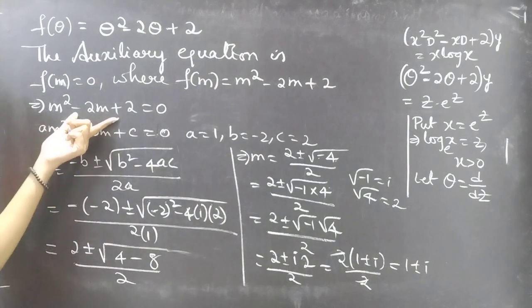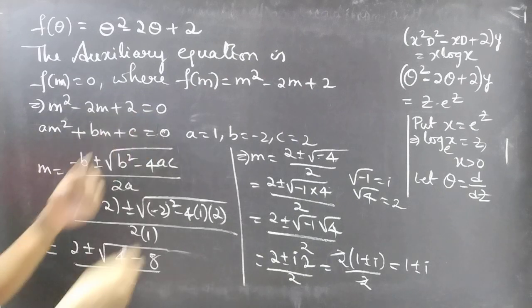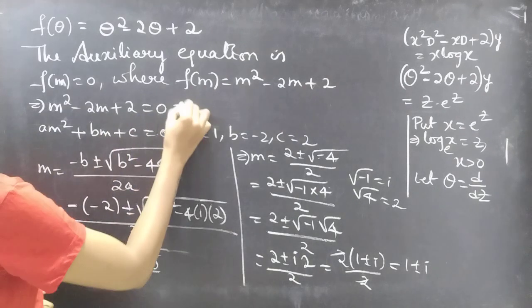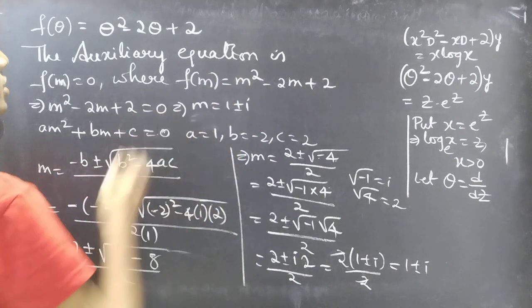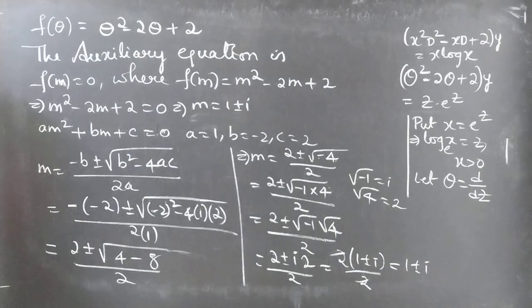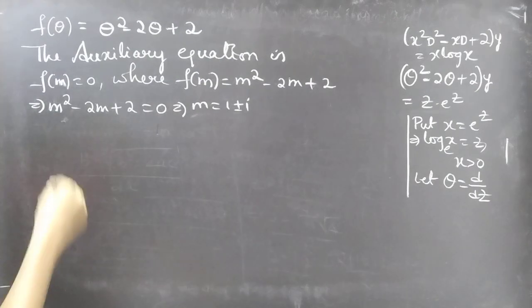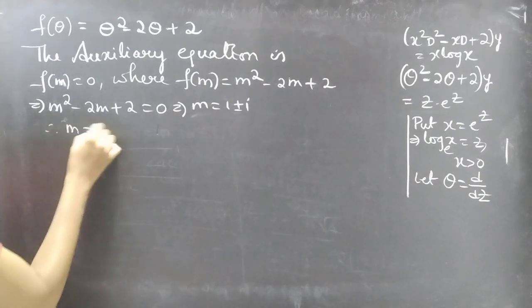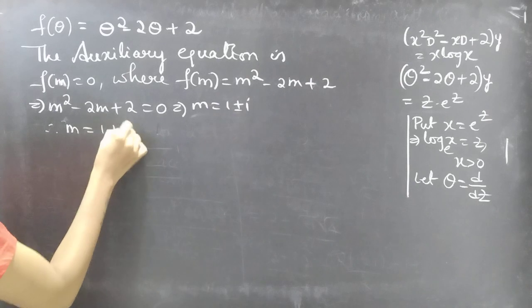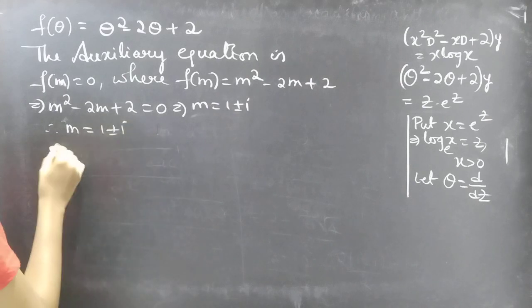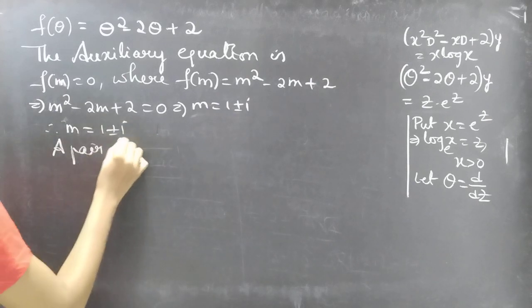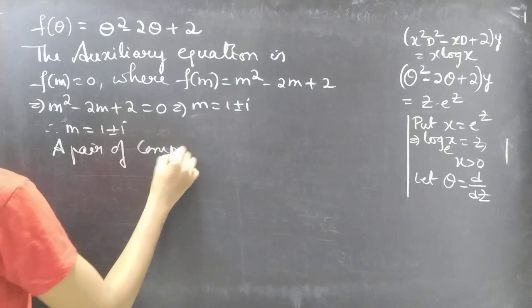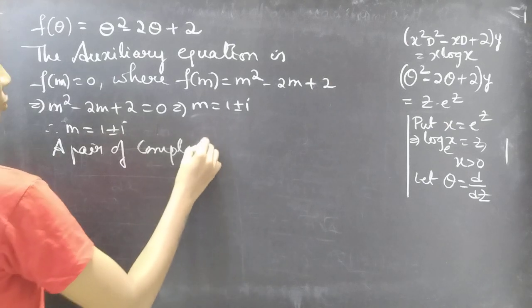So when m squared minus 2m plus 2 equals 0, we get m equals 1 plus or minus i — a pair of complex conjugate roots.